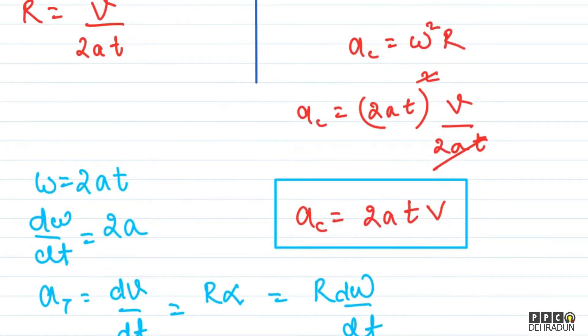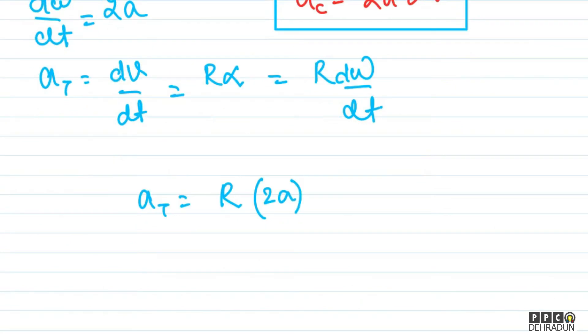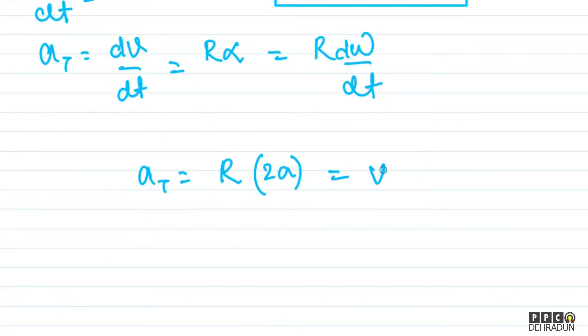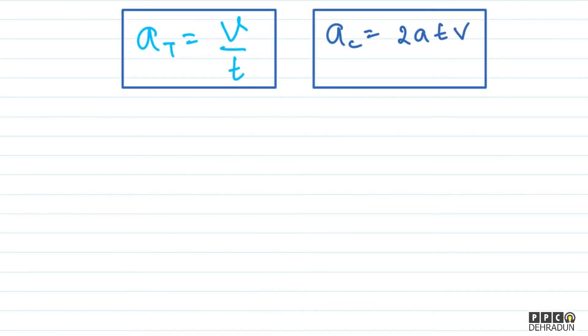Therefore, a_tangential equals r times d omega by dt, which is 2a. We calculated r as v upon 2at, so substituting: v upon 2at times 2a. The 2a cancels, giving a_tangential equals v upon t. We have both v and t given in the problem, so we can easily calculate tangential acceleration.